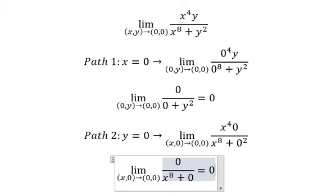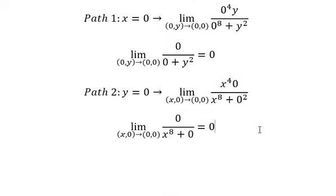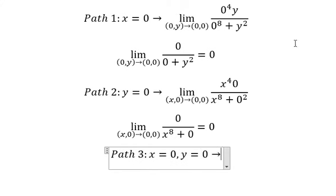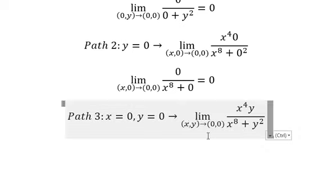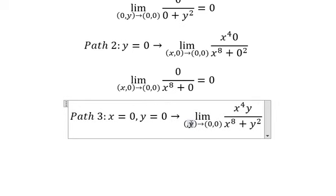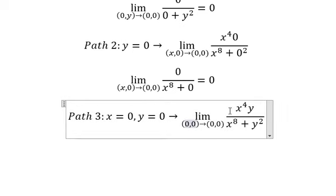Now we consider part number three. That's about x equals zero, y equals zero. We put zero in here, so everything in here you got zero, zero, zero, and zero.